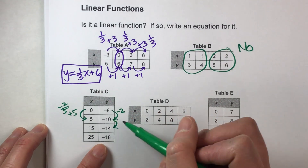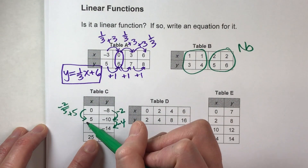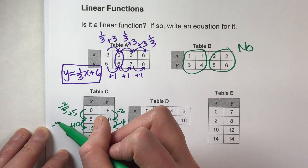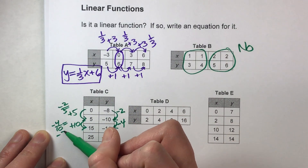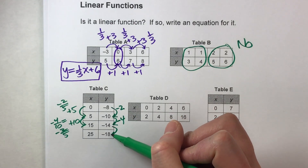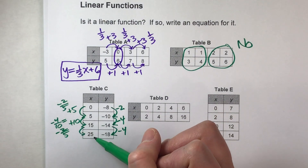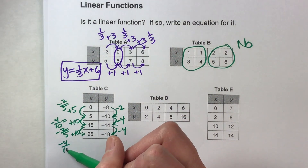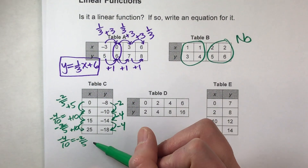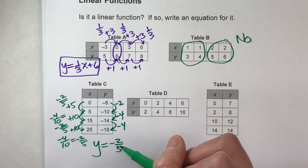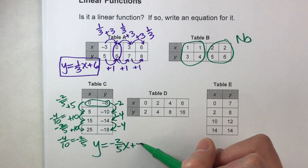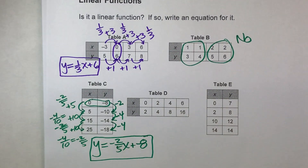Let's check the next pairs. From negative 10 to negative 14, it went down 4, and the run goes from 5 to 15, up 10. So the slope is negative 4 over 10, which reduces to negative 2 fifths. For the last pair, from negative 14 to negative 18 went down 4, and from 15 to 25 went up 10. That's negative 4 tenths, again negative 2 fifths. The slope is consistent at negative 2 fifths throughout, so it is linear. The equation is y equals negative 2 fifths x plus negative 8.